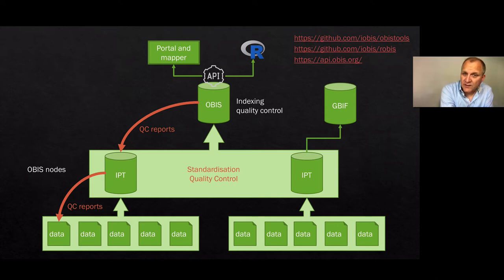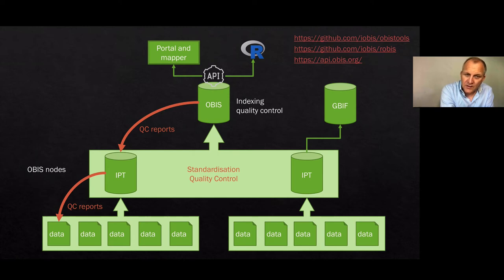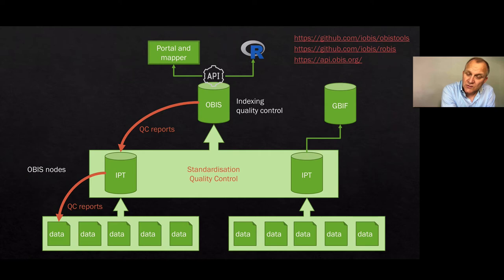We provide the data through our API web service, which drives the portal, the mapper, and the R package. We also serve data to GBIF, the Global Biodiversity Information Facility. We do that by publishing — the OBIS nodes are doing this — and when they publish the resources on the IPT, they also register the datasets with GBIF.